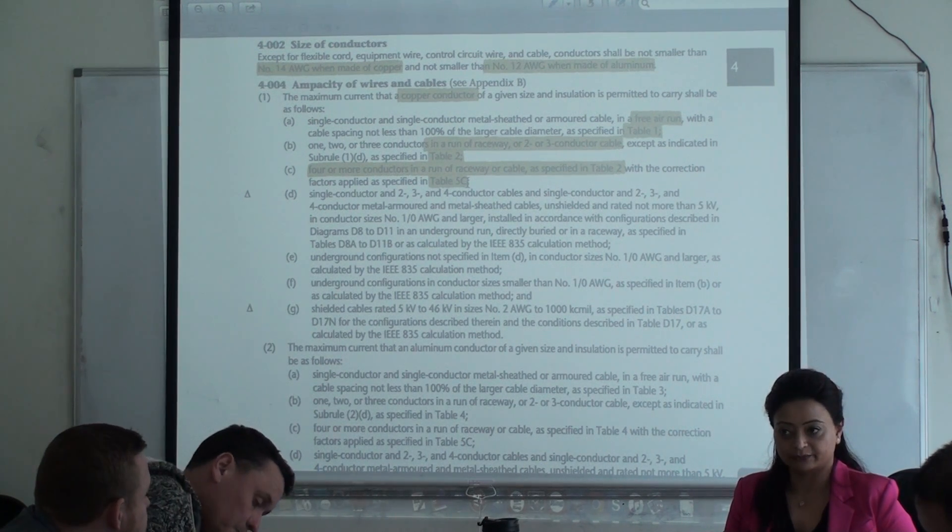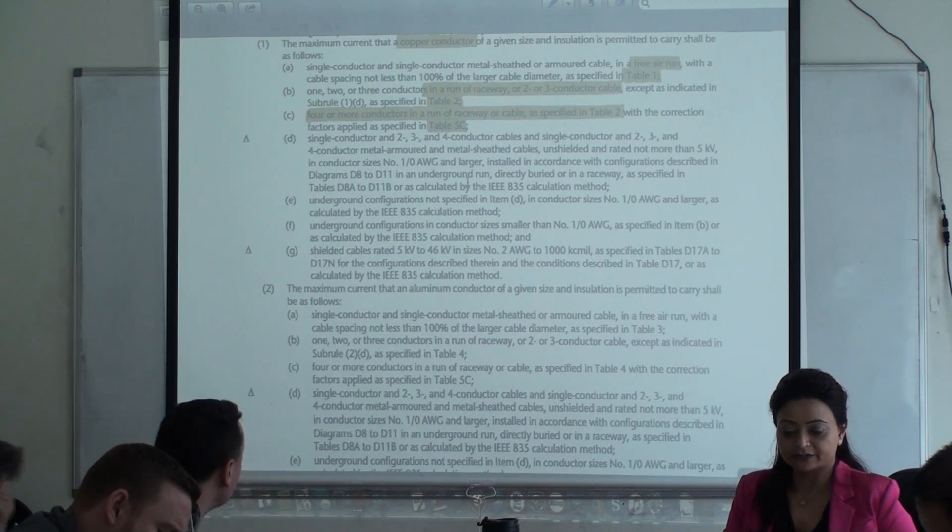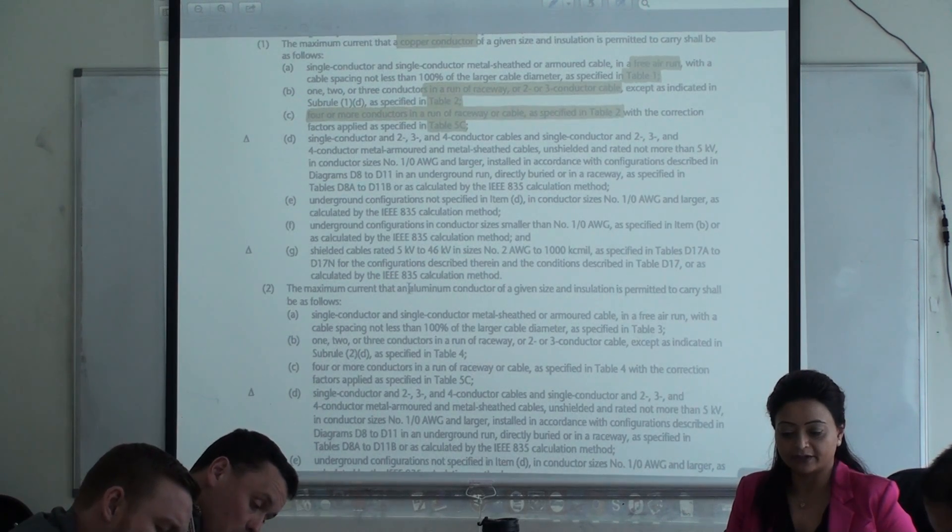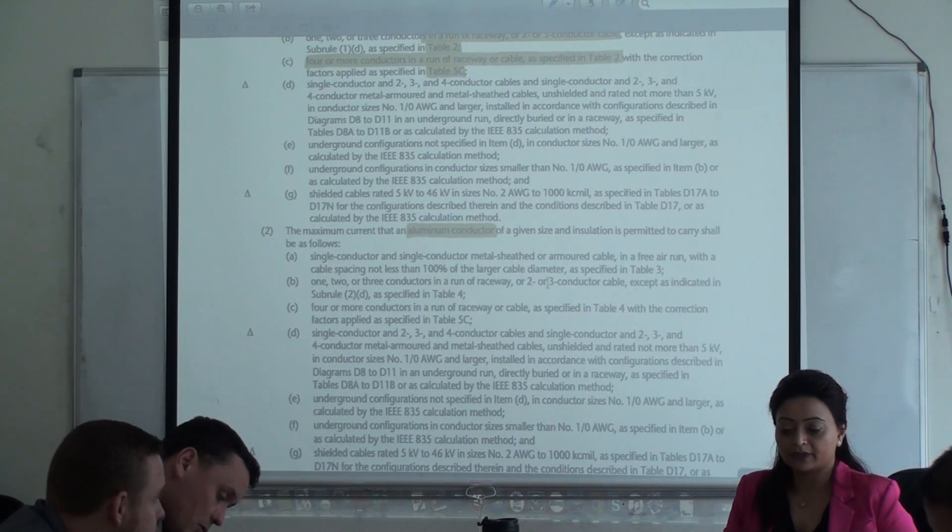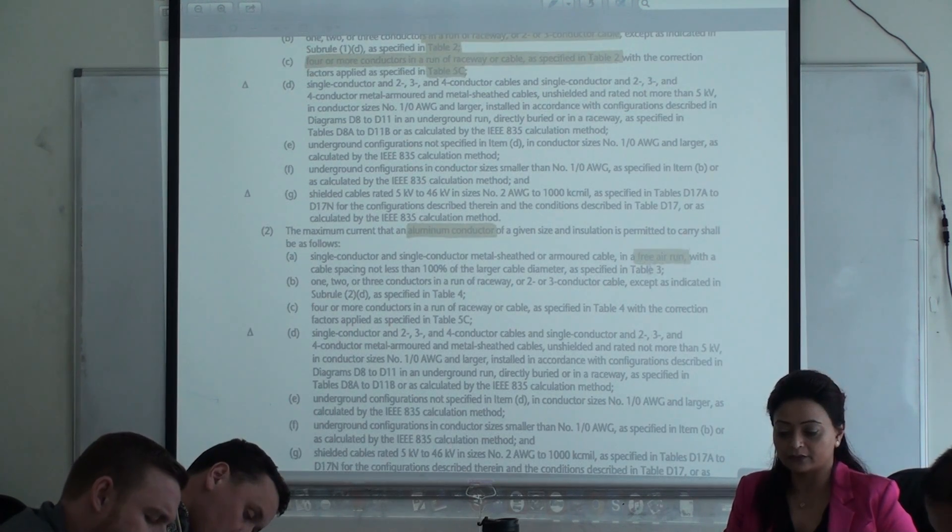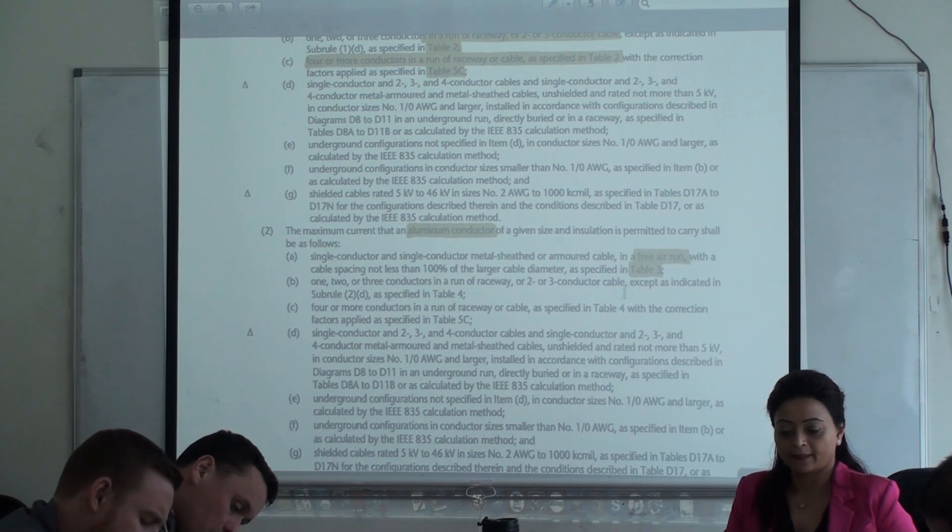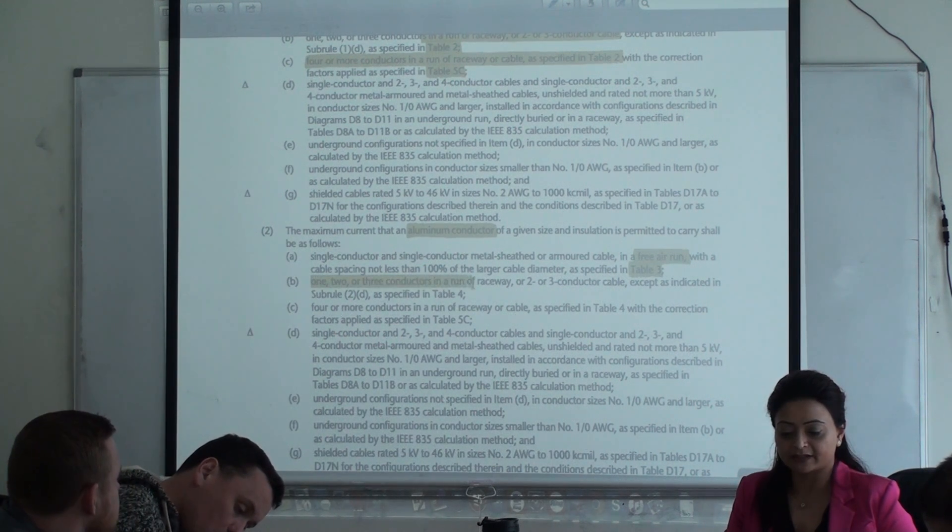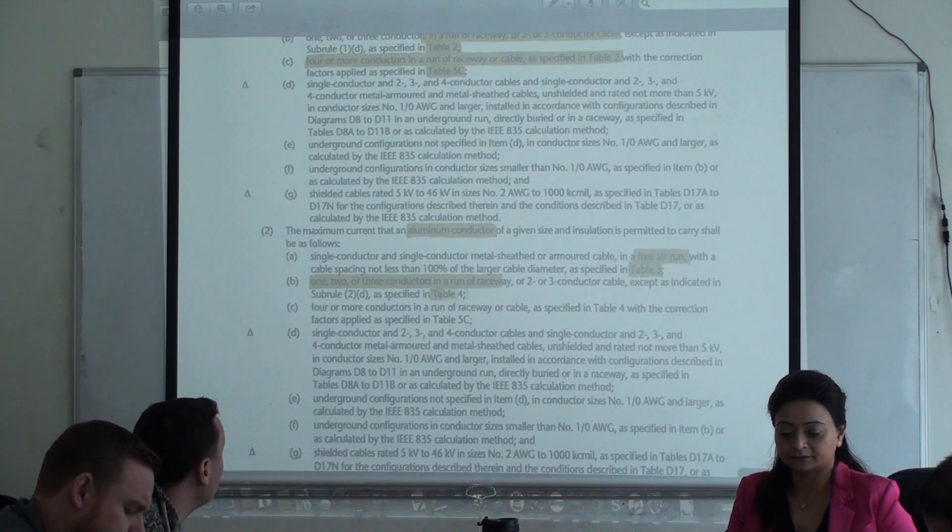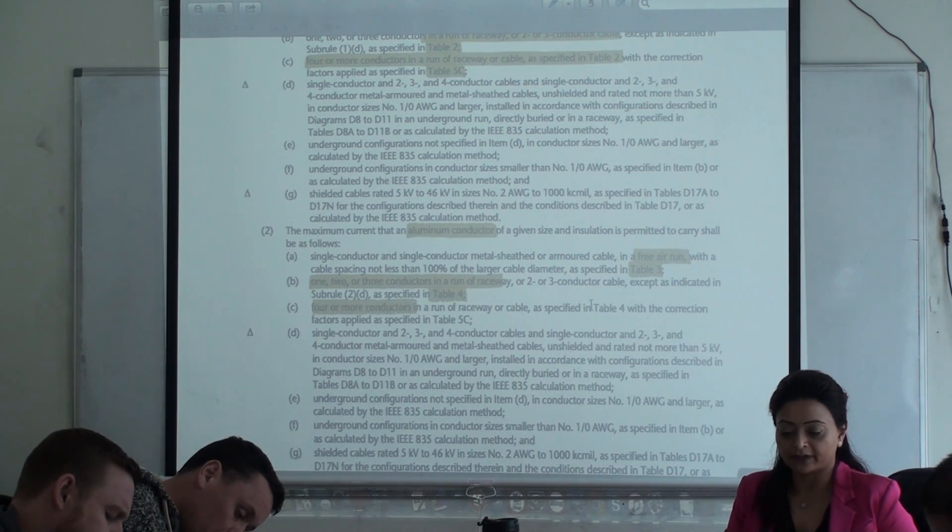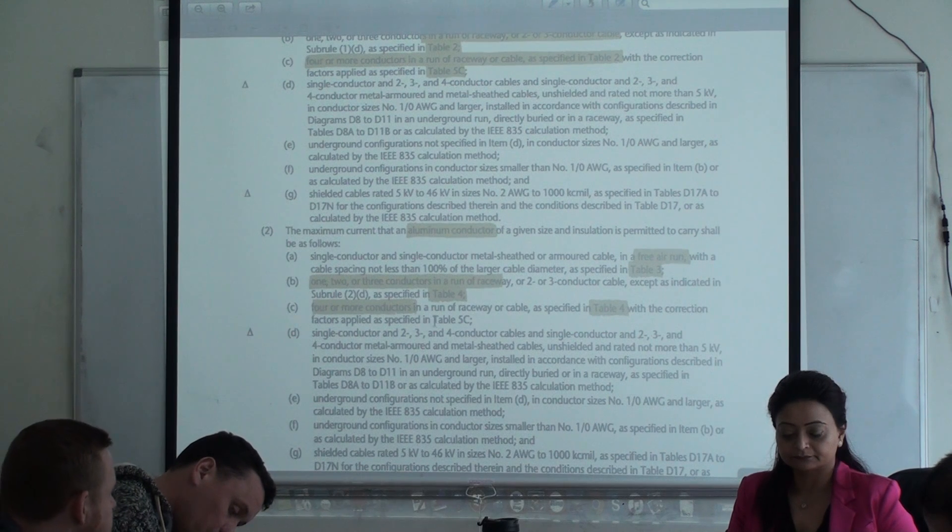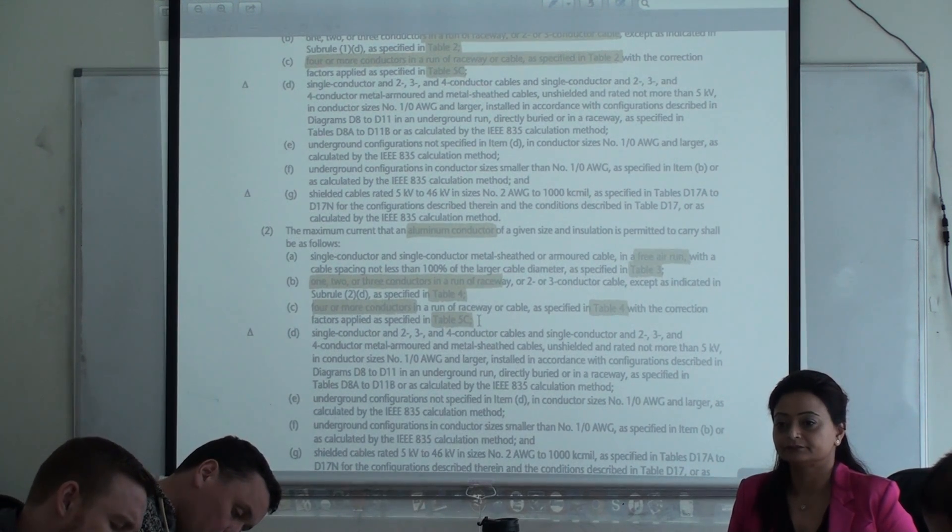Now we're going to talk about aluminum. Aluminum is in sub rule two. In sub rule two, you're going to highlight the word aluminum right here. When aluminum wire is in free air, you go to table three. When you have three wires in a raceway, you go to table four. When you have four or more wires, you go to table four and table 5C. Done.